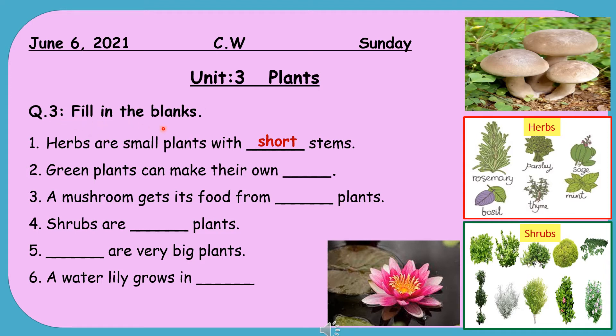Your first sentence is: Herbs are small plants with _____ stems. Yes — short stems. Herbs have short and soft stems.